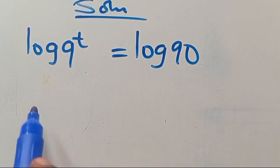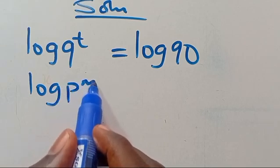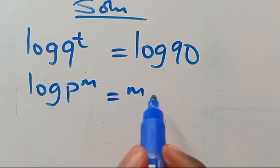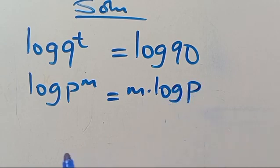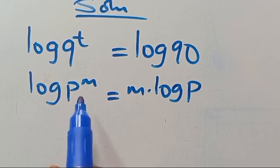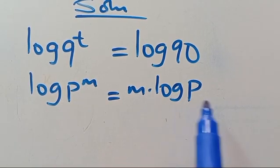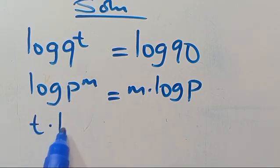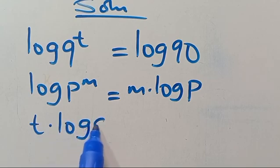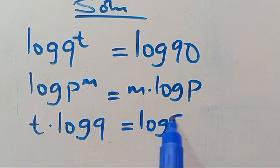Recall that when we have log p to the power of m, this always equals m multiplied by log p — the power m comes down to the base. So this t will come down, giving us t multiplied by log 9 equals log 9t.